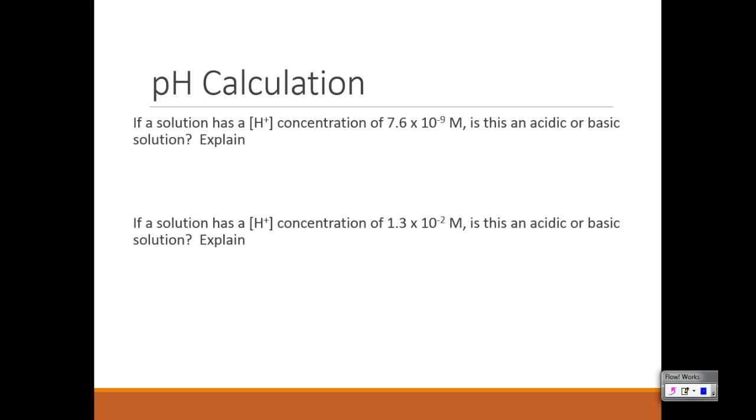So let's do a couple of problems here. The next one we have, if a solution has a hydrogen concentration of 7.6 times 10 to the negative 9th molar, is it acidic or basic solution? And explain. So this one, again, we're just going to look at that negative 9 exponent. And so our pH is going to be equal to 9. And so on a test, when we're talking about explaining, we'd say with that many hydrogen ions, that this would be a basic solution.